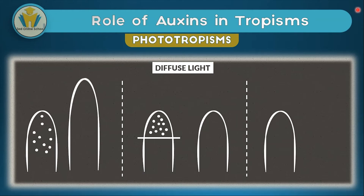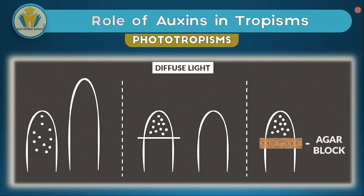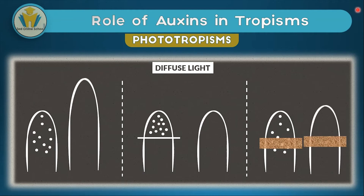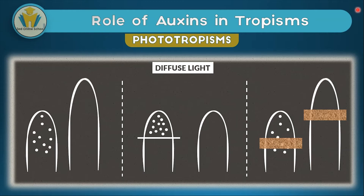In the third experiment, the only change is that a material permeable to auxins is used — specifically an agar block, inserted between the tip of the coleoptile and the other part of it. In this experiment, auxins are able to diffuse through the agar block. After that, growth is seen. From these three experiments it is proved that auxins are truly important for the growth of a shoot.